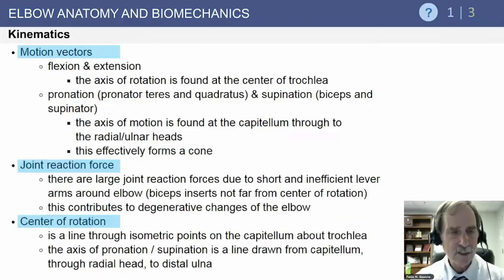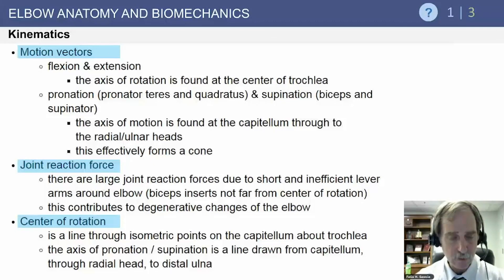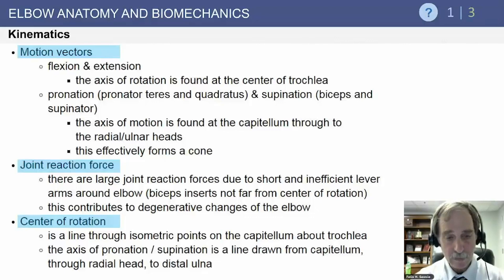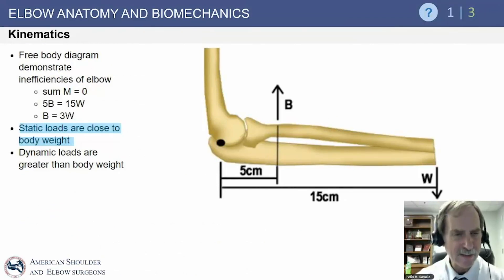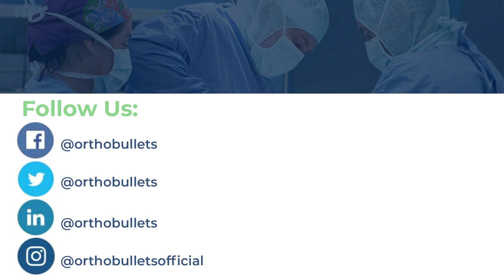As far as biomechanics: elbow motion vectors are primarily in flexion and extension. There are large joint reaction forces across the elbow especially with sports, due to the short and relatively inefficient lever arms. The biceps is very close to the center of rotation, which lies along the isometric line between the capitellum and trochlea — important when placing a hinged external fixator. Static loads across the elbow can approach body weight, while dynamic loads — such as in throwing — actually exceed body weight.